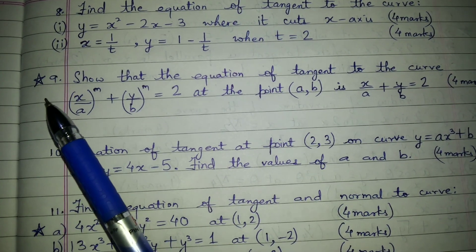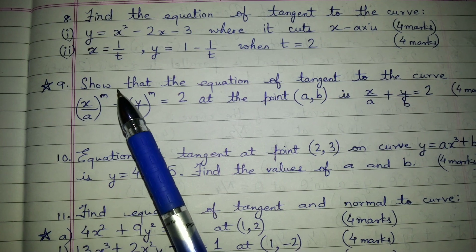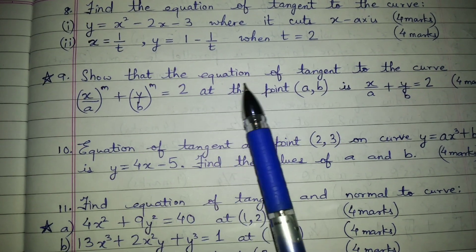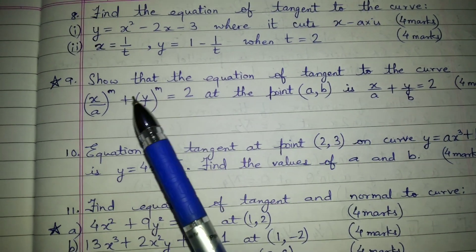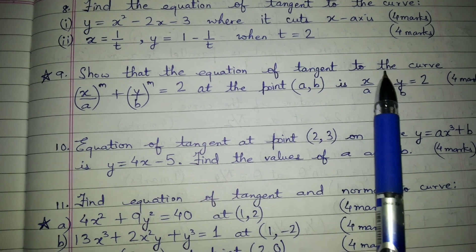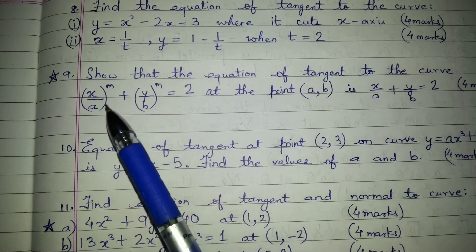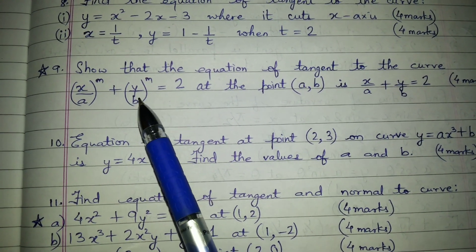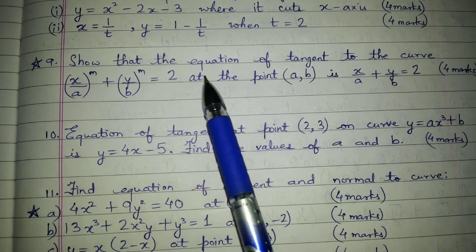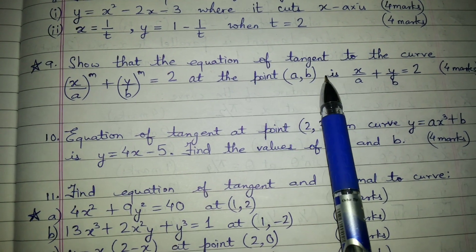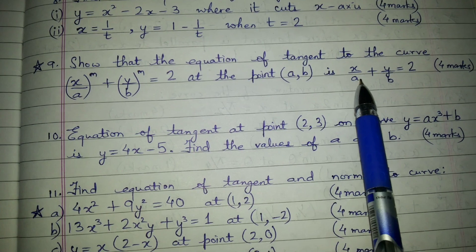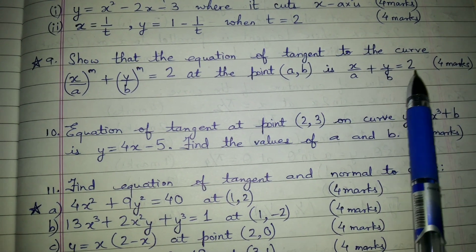And then question number nine. This is also related to equation of tangent but here it is given as a proof. Show that the equation of the tangent to the curve x upon a raised to m plus y upon b raised to m equals two at a point a comma b is x upon a plus y upon b equals two for four marks.